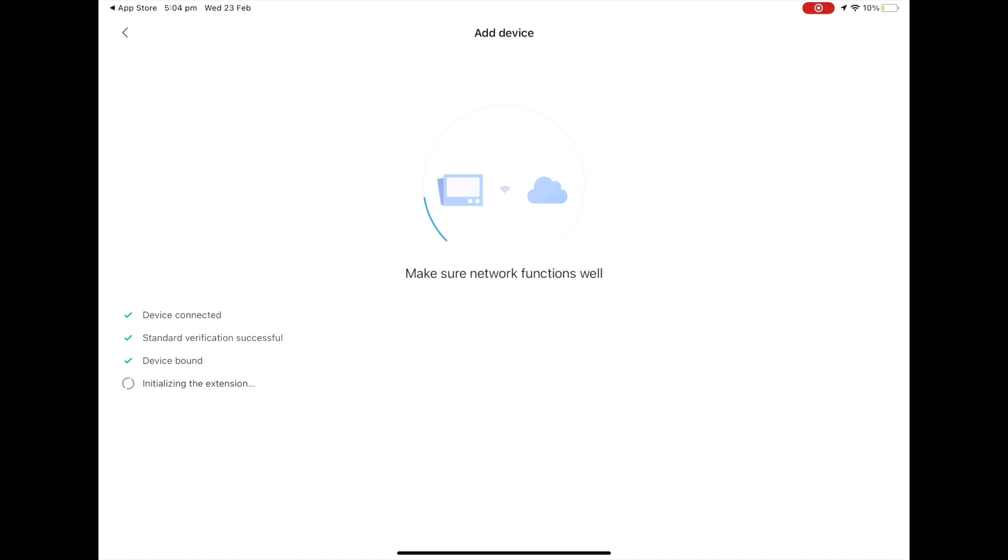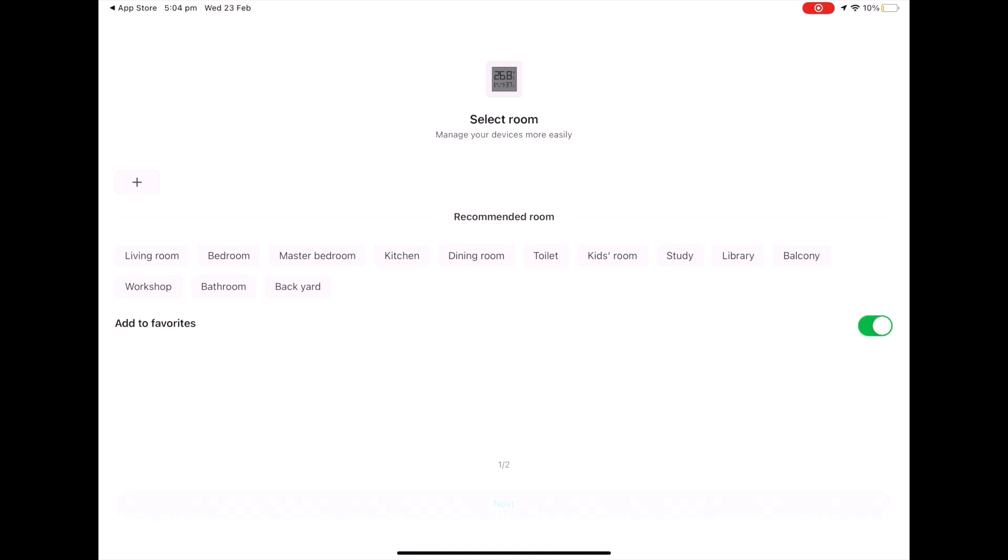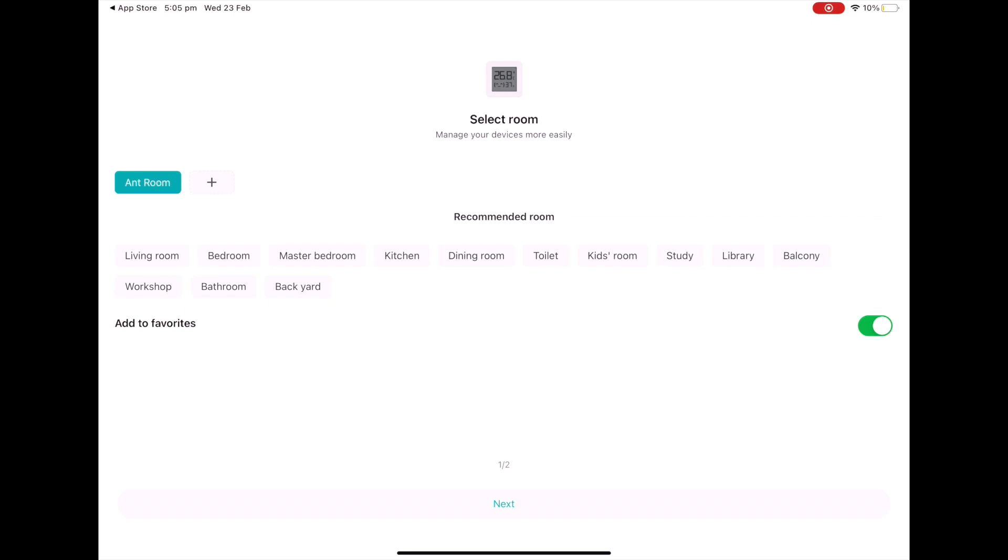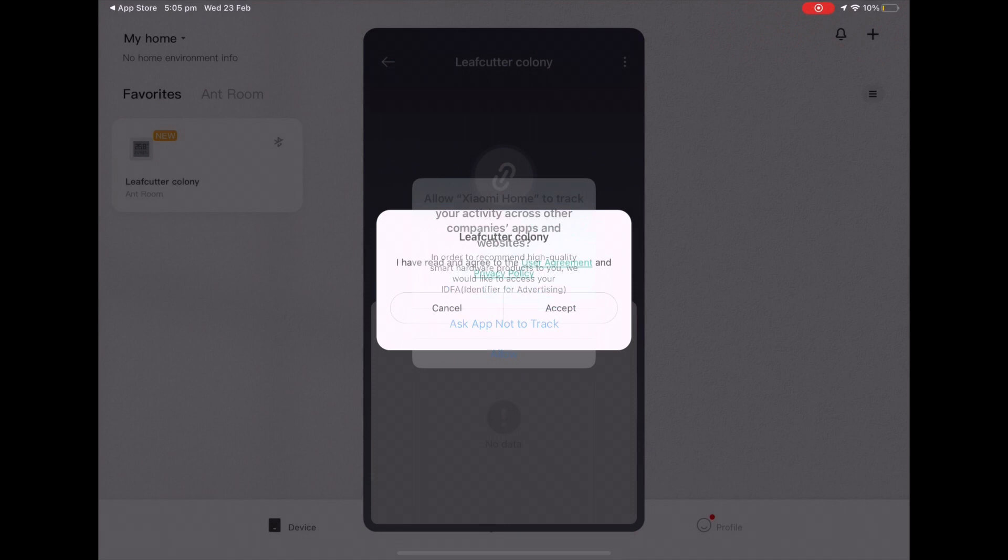This failed a few times for me until I realized I was too close. So I moved it about a foot away and it accepted it quite readily. Then just name your sensor. I'm going to set this as an ant room and then name the sensor leafcutter colony. I'm going to set that and okay. This is up to you but I ask it not to track me and accept. And there we go. We are connected to it and it's all set up.